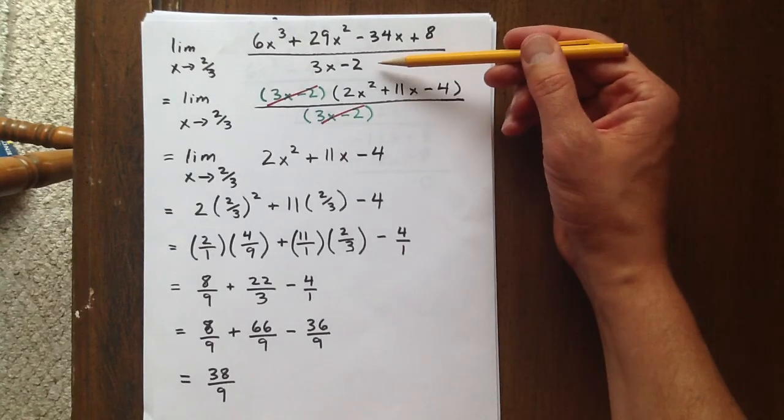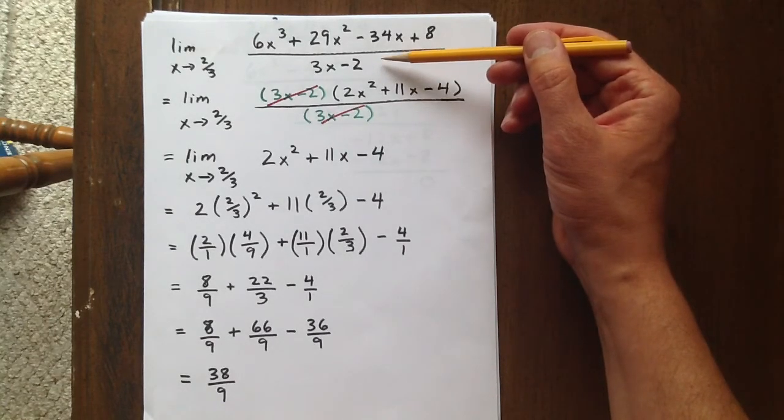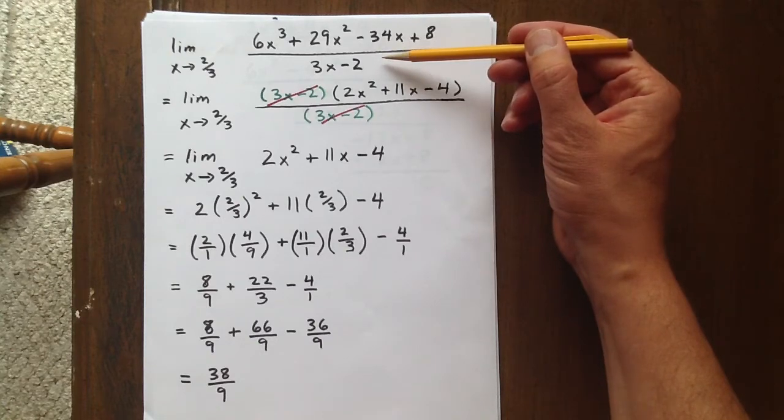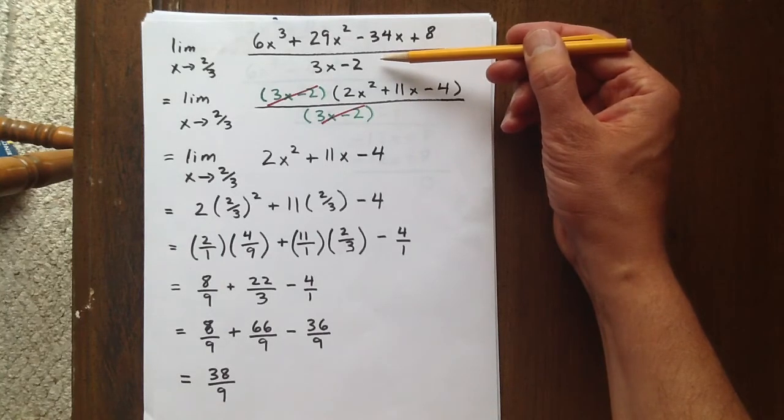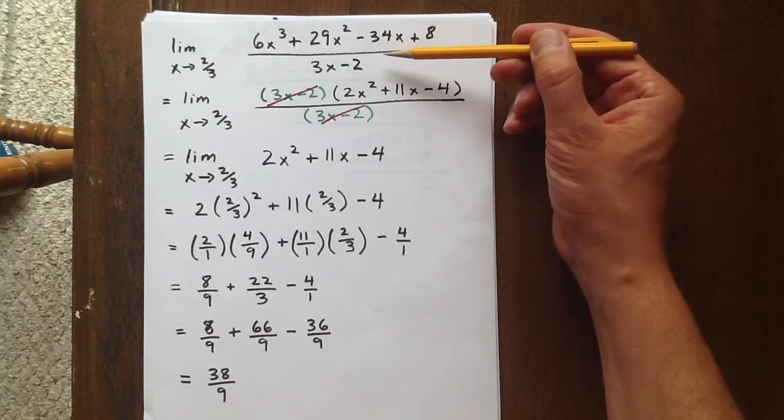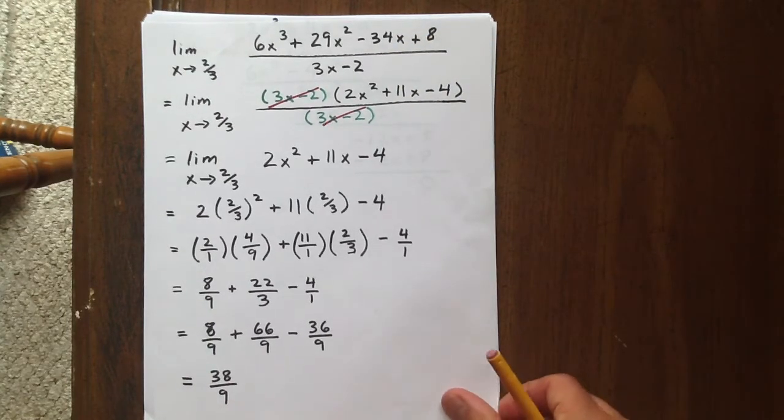What we want to do is factor the factor of x minus two-thirds out from numerator and denominator, multiplying that factor by three, we see that we can factor 3x minus two from both numerator and denominator and have the same desirable effect.